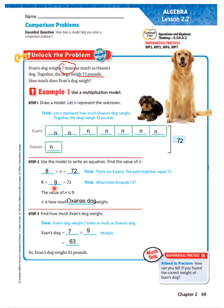There are eight parts to the problem and all together they equal 72, so it would be eight times N equals 72. What number times eight equals 72? That's nine. So we just found out how much Oxana's dog weighs. Now it says find how much Evan's dog weighs. Evan's dog weighs seven times as much as Oxana's dog. If Oxana's dog weighs nine and Evan's dog is seven times that, seven times nine is 63. So Evan's dog weighs 63 pounds.